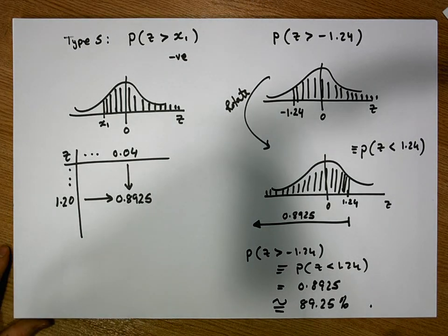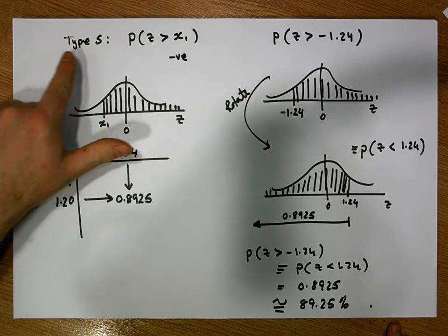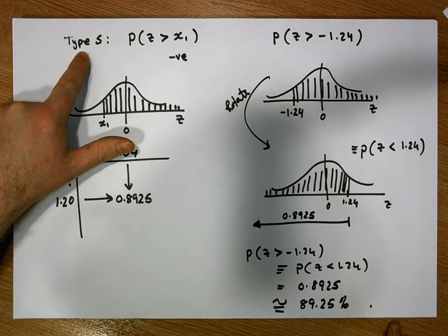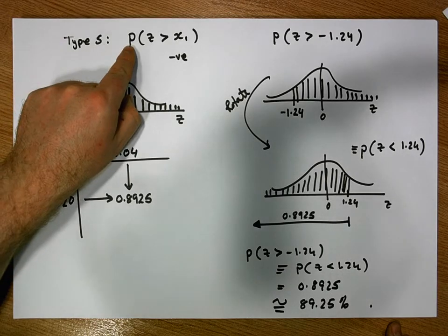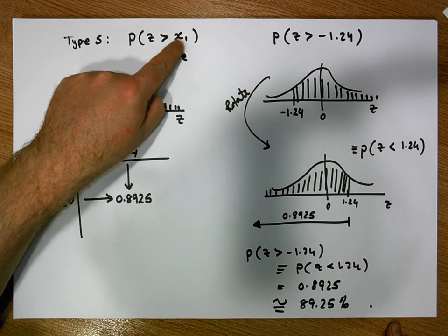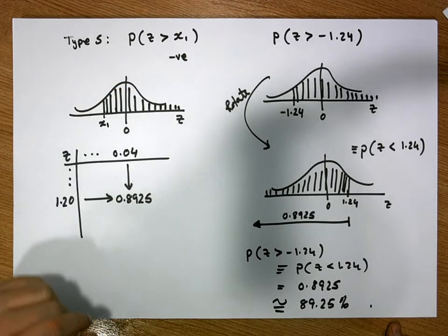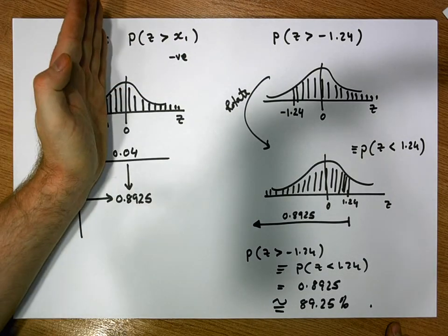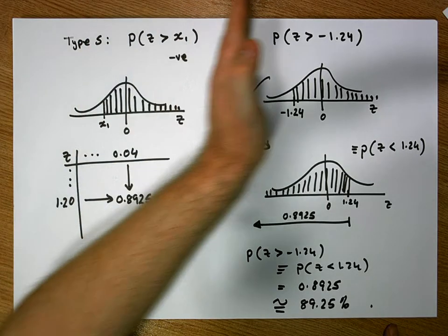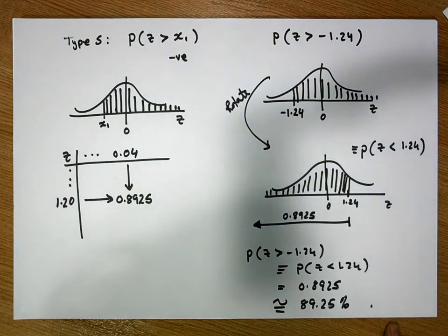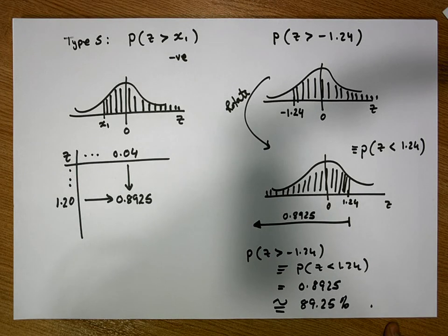That concludes this short video on the calculation of type 5 probabilities — probabilities where we're interested in calculating the probability of a z-score being greater than a particular negative value. In other words, we're calculating from a negative value all the area under the curve to the right-hand side of it. Thank you for your time. My name is Jonathan Lambert with the Mathematics Development and Support Service at the National College of Ireland.